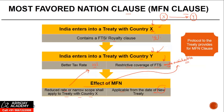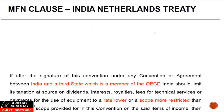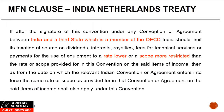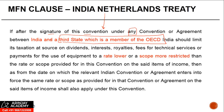Normally, the MFN clause is found in the protocol to the treaty. Let's look at one of the MFN clauses: if after the signature of this convention — which is the treaty between India and Netherlands — under any convention, any treaty, or agreement between India and a third state which is a member of the OECD. This means that if India enters into a treaty with a non-OECD country and that contains some better clauses, those will not automatically apply here. It's only a treaty with OECD countries.